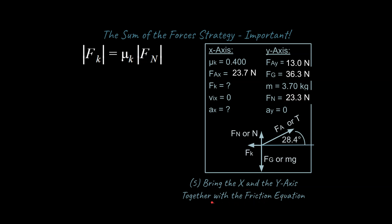The last strategy you're going to use for these problems is you're going to bring the x and the y-axis together with the friction equation. Up until now, we've talked about the x-axis and the y-axis as separate. This equation is really crucial because what it allows you to do is bring together the x-axis and the y-axis. Now we can go ahead and plug in our numbers here, and we end up with 9.32 newtons. That's our kinetic friction force, and I can go ahead and update my known and unknown values if I'm keeping track of what I'm doing in a systematic way.